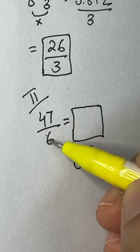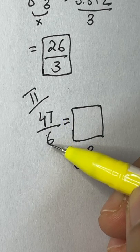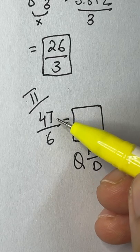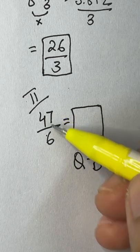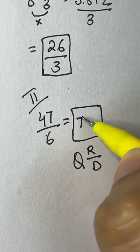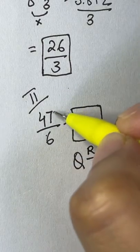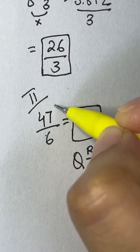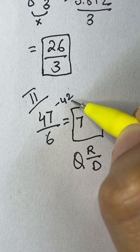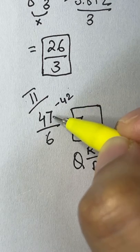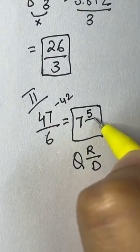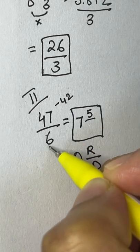In the 6 times table, 6 times 7 gives us 42 — we can't get 47. So 7 is our whole number part. Now find the difference between 47 and 42: 47 minus 42 gives a remainder of 5. The divisor is always the same denominator, which is 6. So the answer is 7 and 5/6ths.